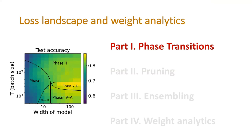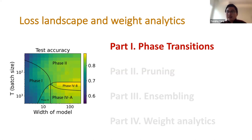Question: What motivates you to plot the diagram against width versus batch size instead of other dimensions? Answer: We looked at the load and temperature parameters, which are strongly motivated by statistical physics. We want to build a simple model for deep learning, so instead of 50 different hyperparameters, we want just two types: load parameters and temperature parameters.